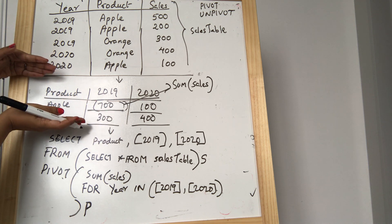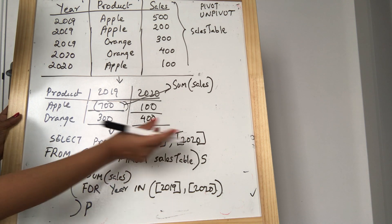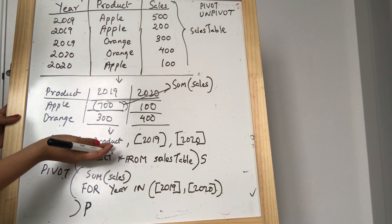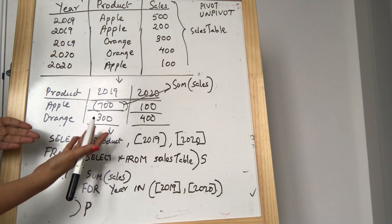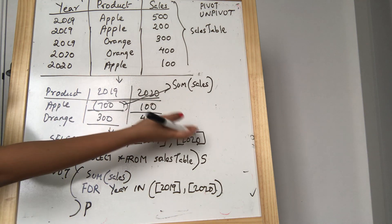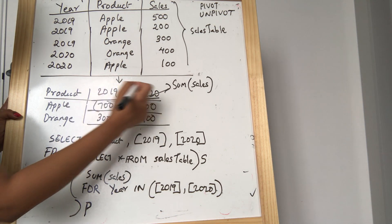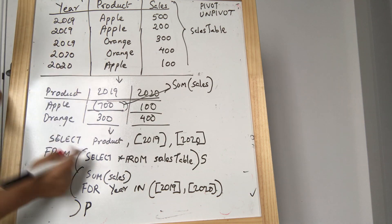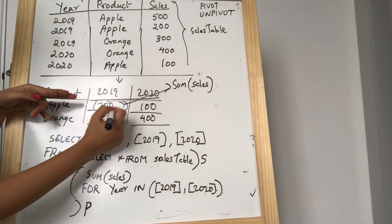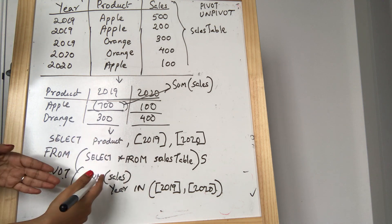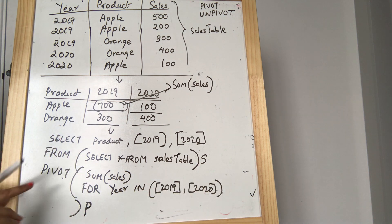When we write this query, we get the pivot output. So: SELECT product, 2019, 2020 FROM (SELECT * FROM sales_table) AS sales PIVOT (SUM(sales) FOR year IN (2019, 2020)) AS P. If we want all columns we can write SELECT *, or we can specify column names. That's the pivot expression — I hope it is clear.